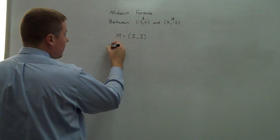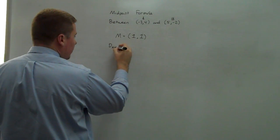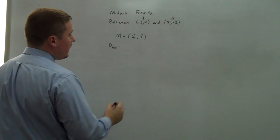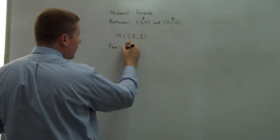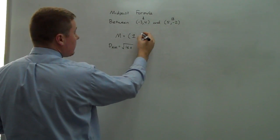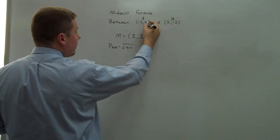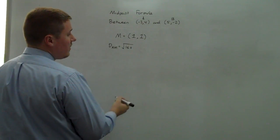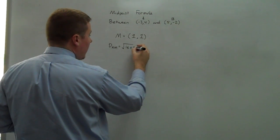So the distance between A and M is going to be from negative 3 to 1, is a distance of 4. 4 squared is 16, plus the distance between 4 and 1 is 3. 3 squared is 9.